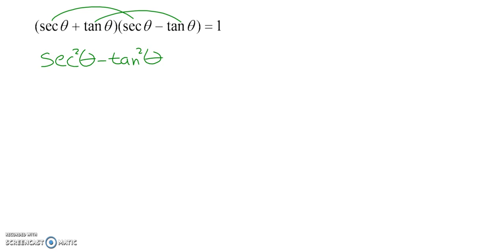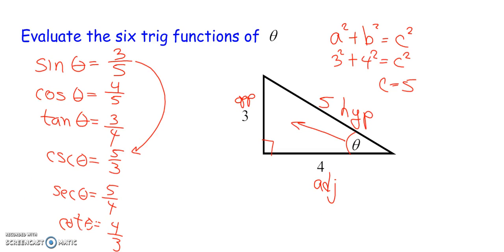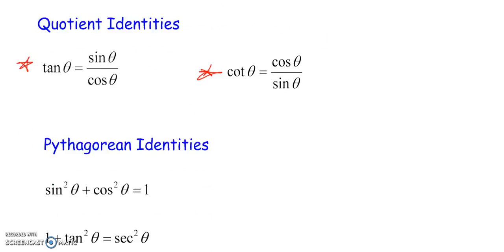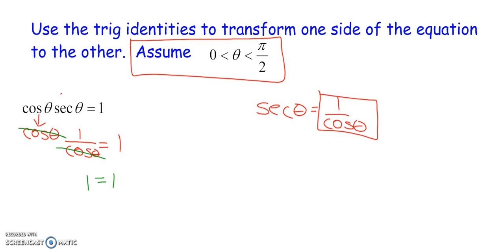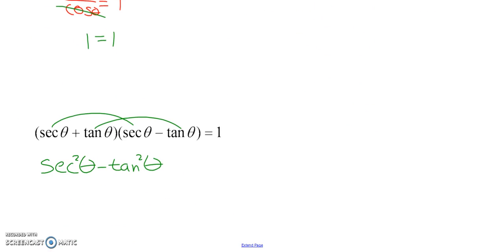And I have to prove that this equals 1. So, it's actually a good idea to go back. And if I reference my Pythagorean identities, going right back to here. I have a Pythagorean identity right here. Secant squared is equal to 1 plus tangent squared. We are going to use that.